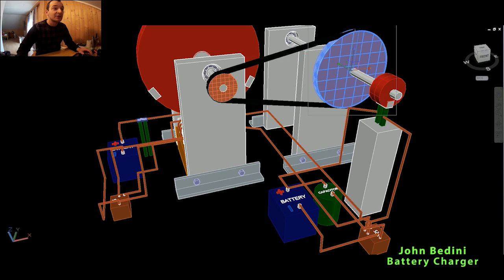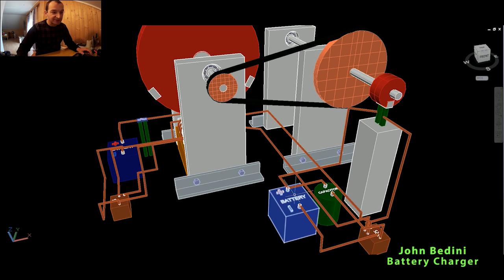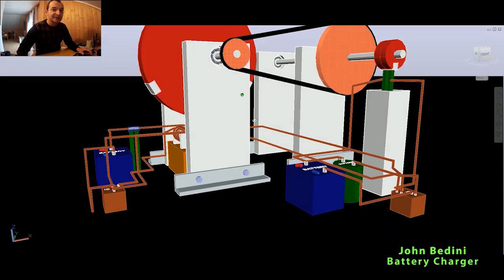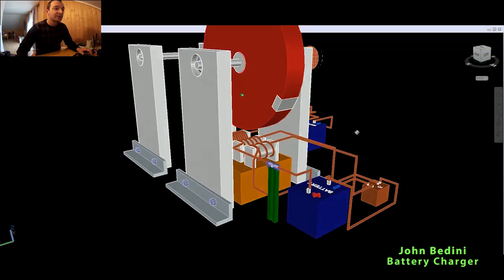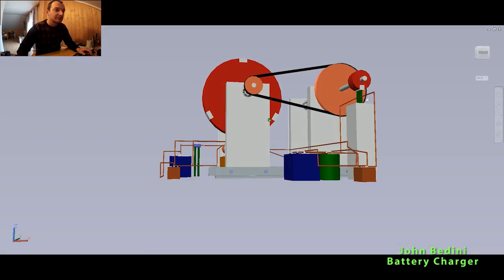By means of the drive pulley, each revolution we get contact on the brushes. Current goes into a high voltage capacitor and is transmitted to the secondary battery. That's the whole John Bedini battery charger.